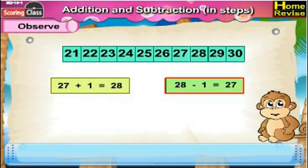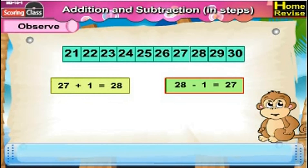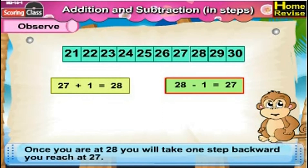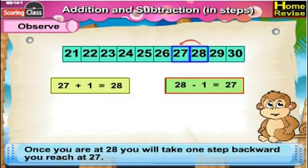28 minus 1 is 27. For subtraction, once you are at 28, you will take one step backward and you reach 27. So 28 minus 1 is 27.